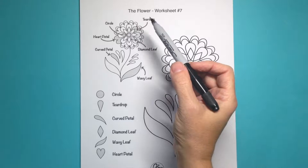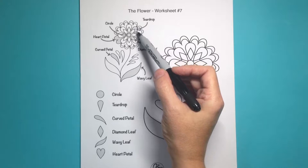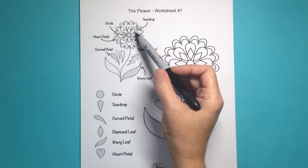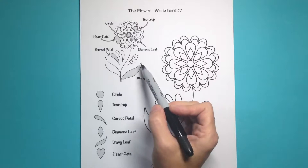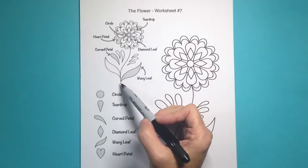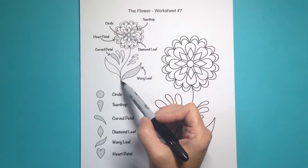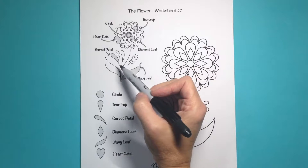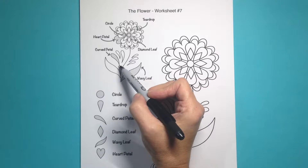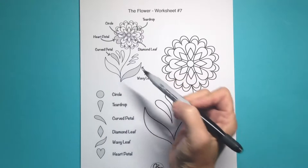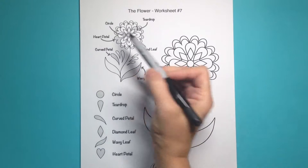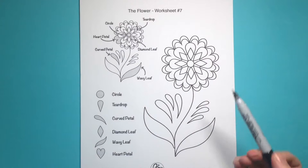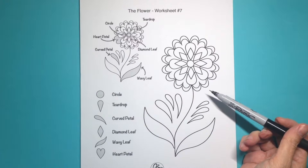These are all very simple shapes, and perhaps as you've been going through this course you're thinking they're just too simple. But these are just a few of the shapes that make the basis of much more complex designs. Once you've learned how to make these basic shapes and you draw them over and over again, they will start to evolve with your style into something uniquely yours.